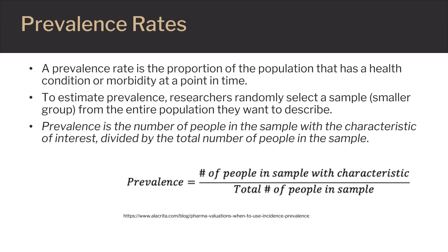The resulting answer is then multiplied by a community population amount, usually 10,000, 50,000, or 100,000. The resulting answer can be expressed as either a percentage or per amount of susceptible population.